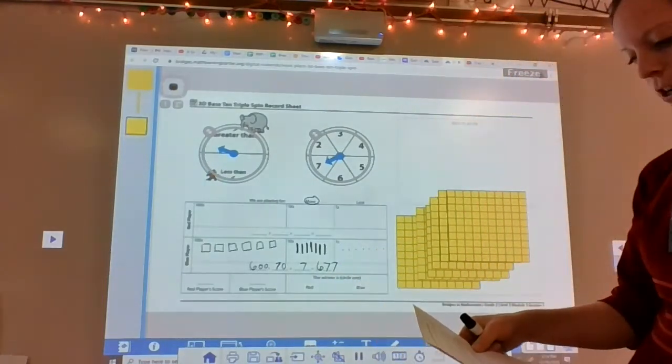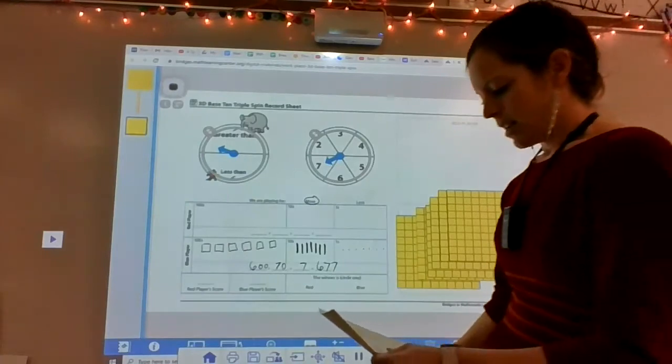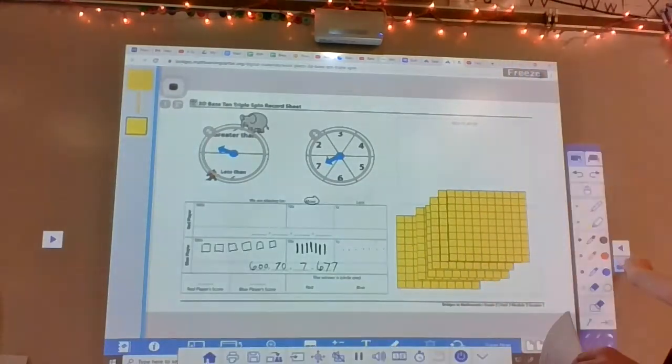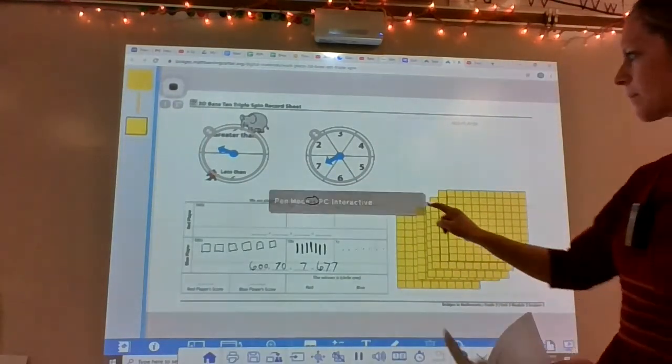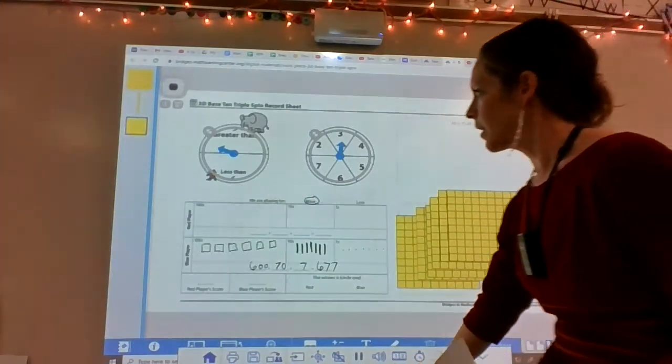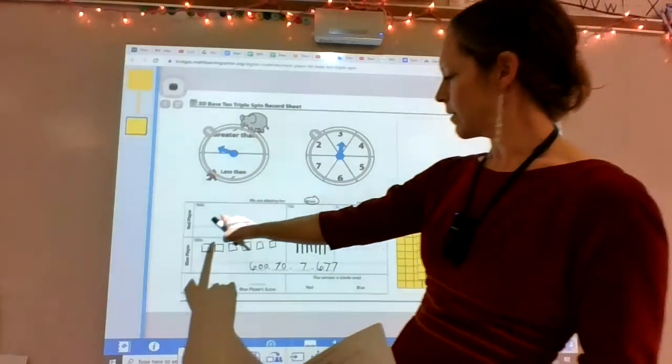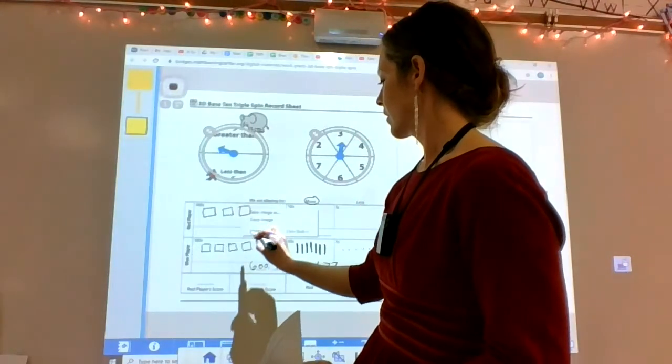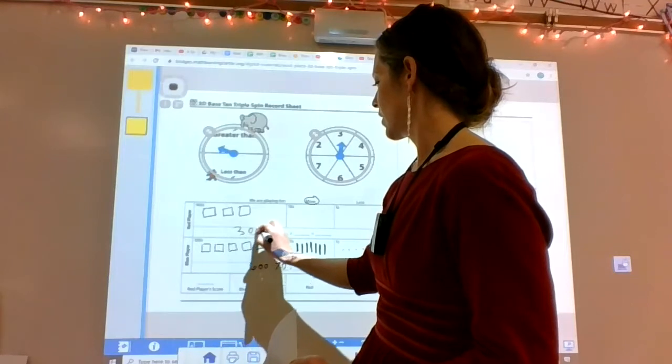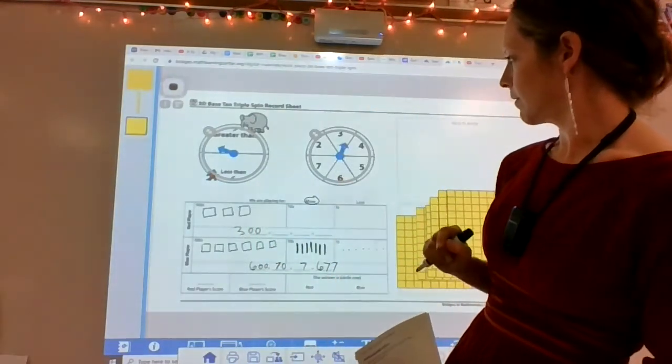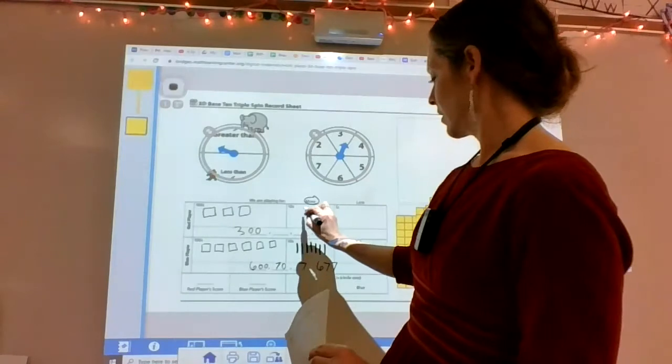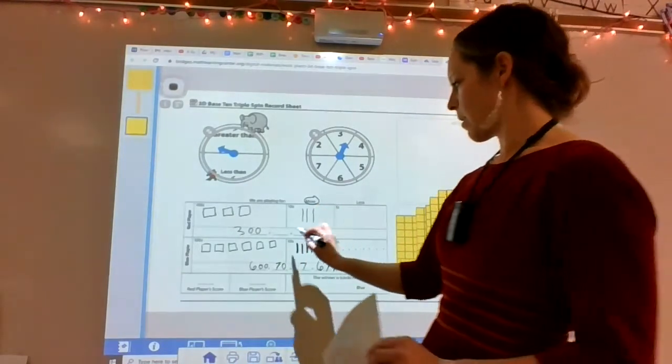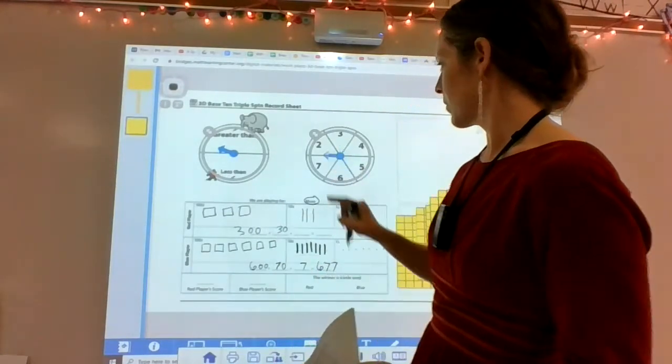Okay, that's the blue player's turn. And now I'll go. Red player gets to go. Here's my number. I spun three for the hundreds. I'll draw that out. One, two, three. There's my number. Three hundred. I'll spin again for my ten spot. I got a three again. So I'll draw three ten sticks. Three ten sticks stands for thirty.